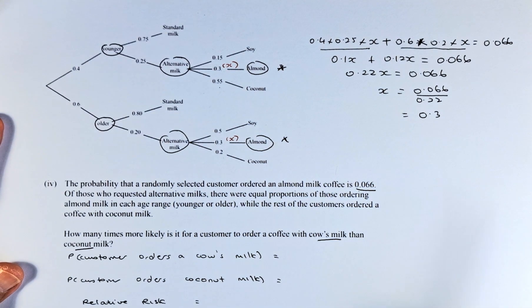Once we have done all that, we are now going to do the relative risk. How many times more likely is it for the customer to order a coffee with cow's milk than coconut milk?